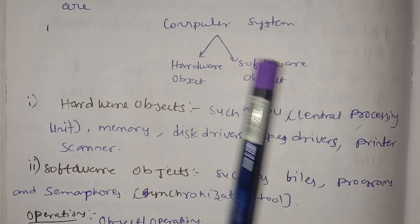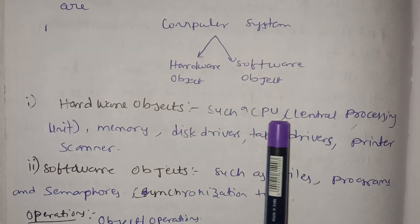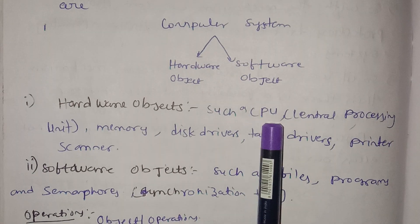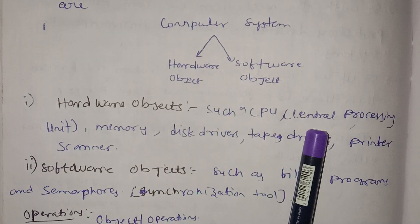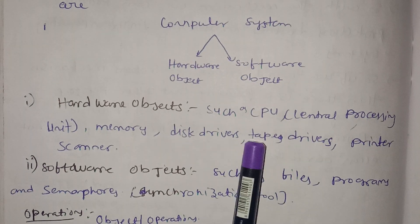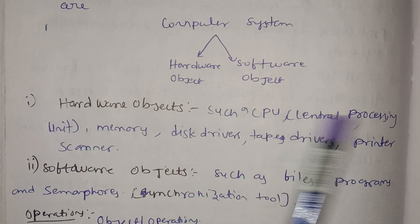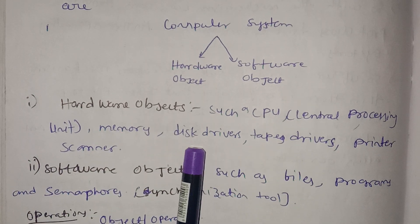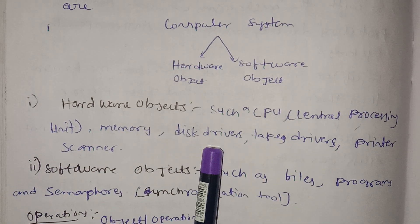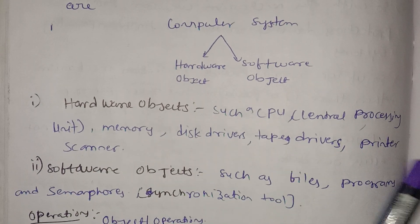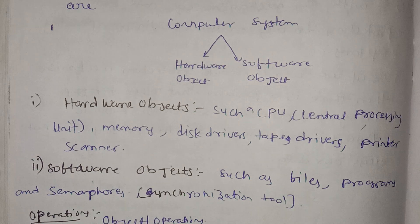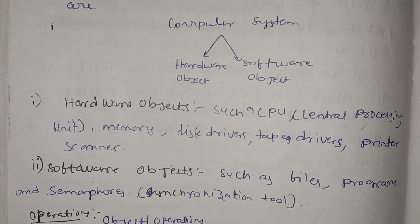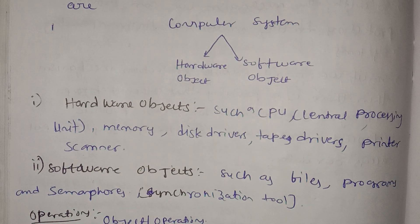Hardware objects such as the CPU (central processing unit), memory, disk drivers, tape drivers, printers, and scanners — these are all hardware devices.